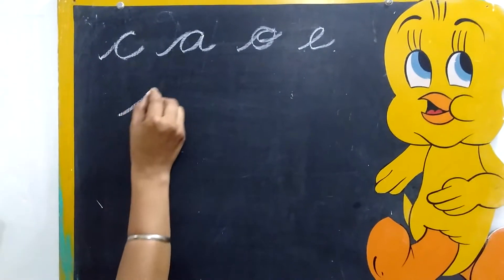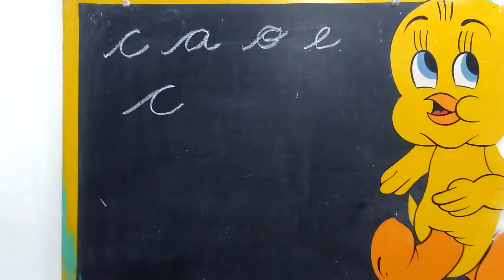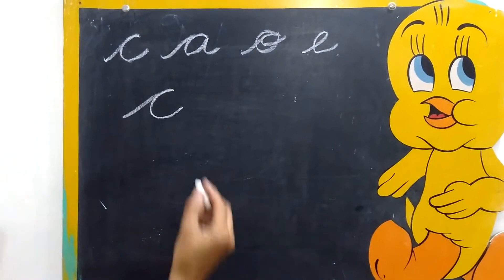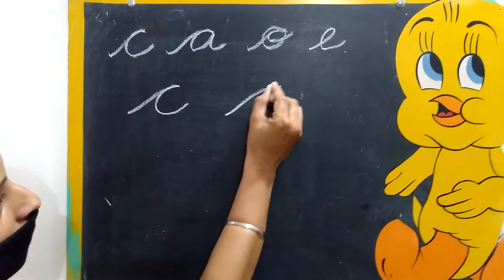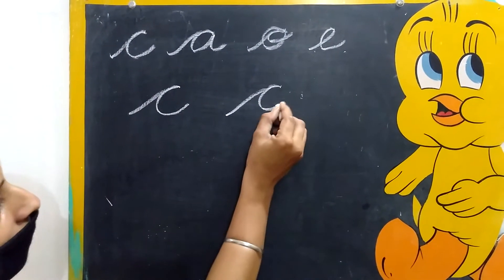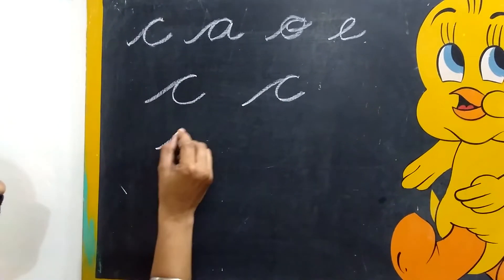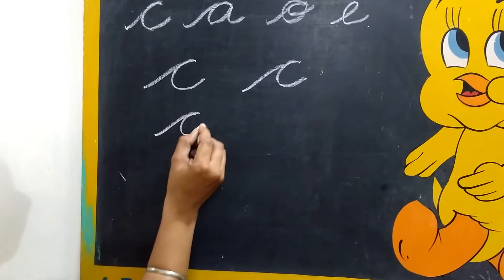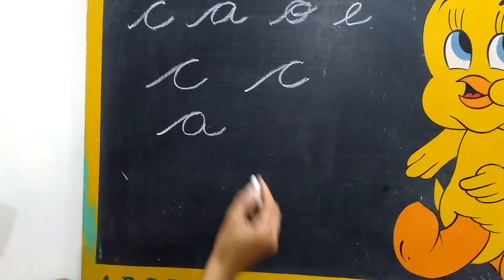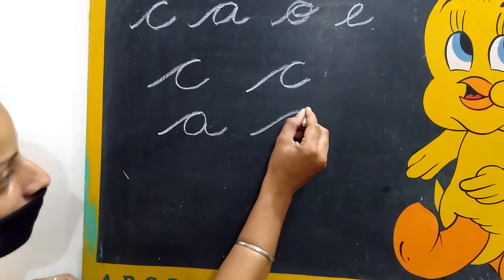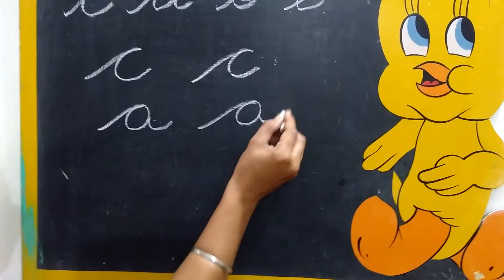Slanting line, then curve line. Even after c, slanting line, then curve line. Next: slanting line, circle, a. Slanting line, circle, a.